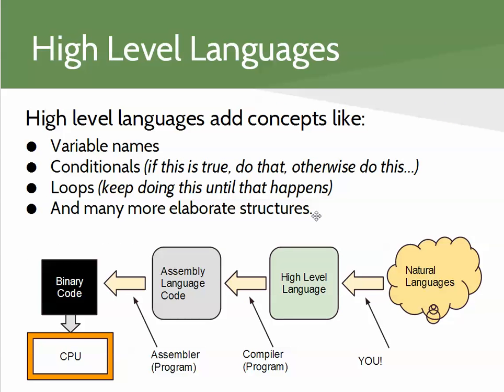A higher-level language adds the concept of variable names — a symbolic notation like 'dollars' for how much money you have, stored at a particular address in memory, like address 216 in main memory. Instead of referring to it as address 216 or register 3, we refer to it as 'dollars' or 'cars' or whatever we're computing. Higher-level languages also add conditionals: if this is true, do this instruction; otherwise, do something else — using Boolean logic. We can use loops: keep doing this instruction until a certain condition happens. That's what high-level languages give us, and that's what we'll talk about a lot this semester.